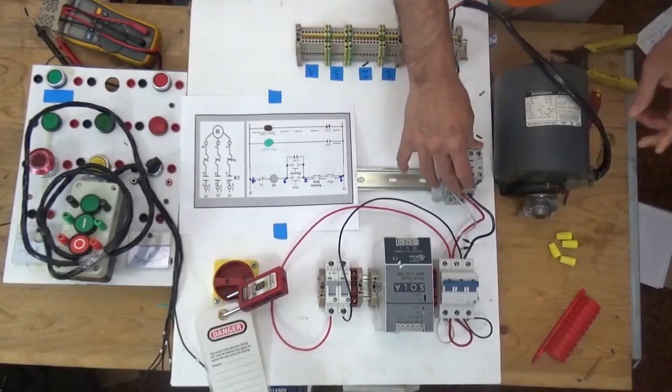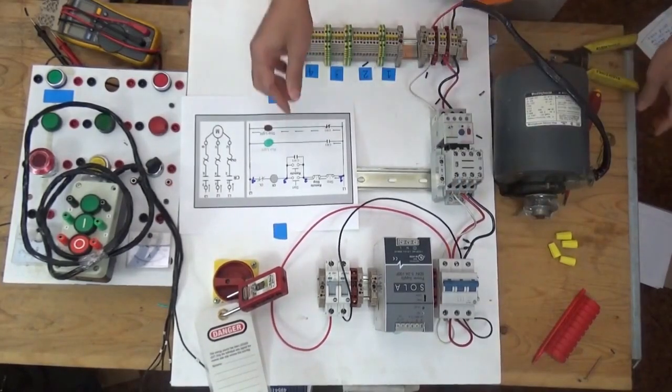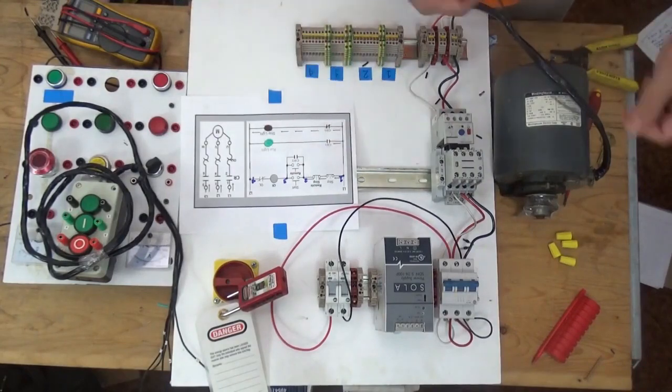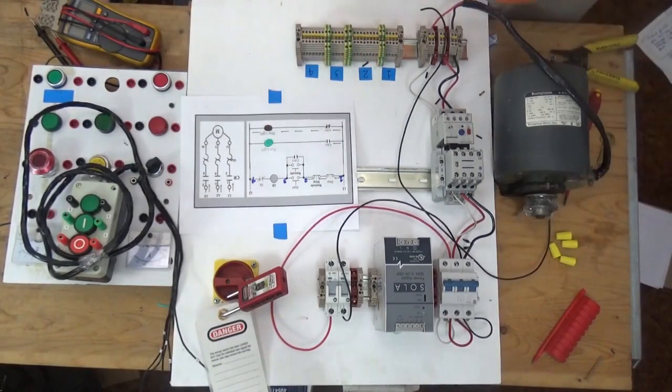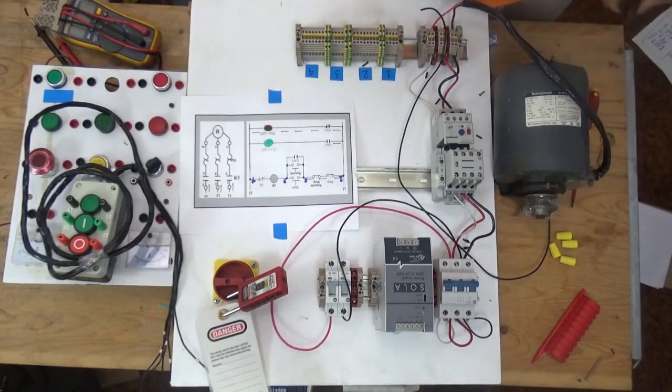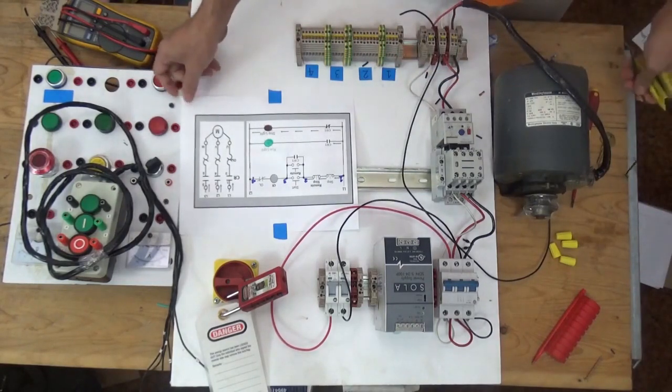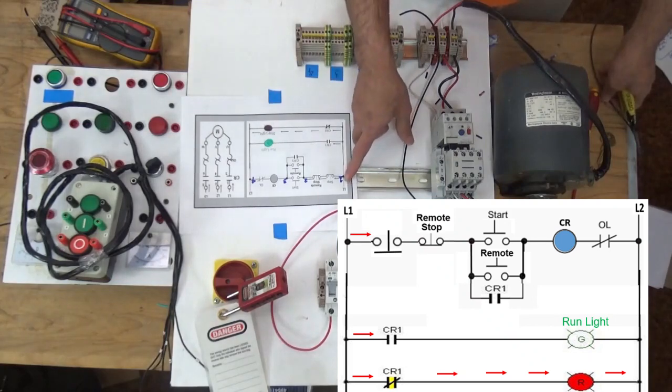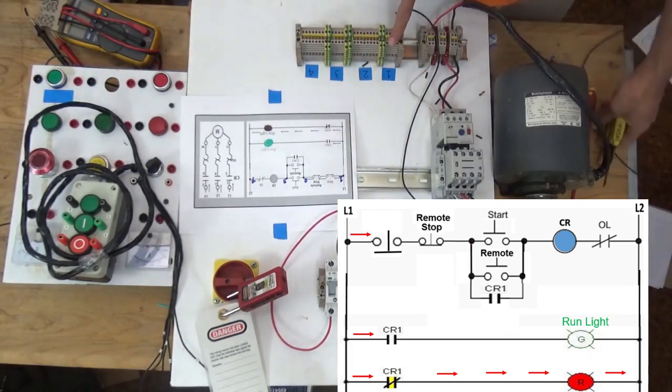The next thing we're going to do is follow this schematic diagram. I put markings to make it easier for me to wire. You see this one, line one, I put this terminal block one.